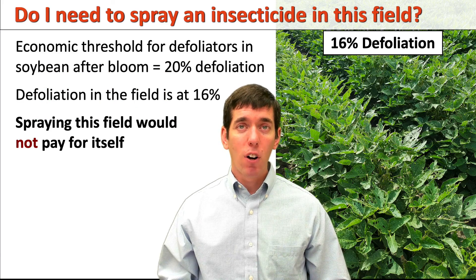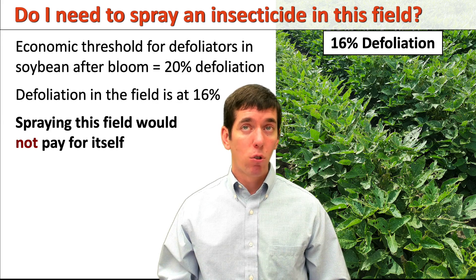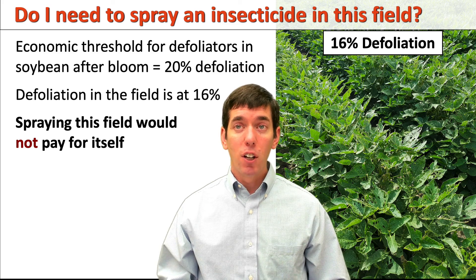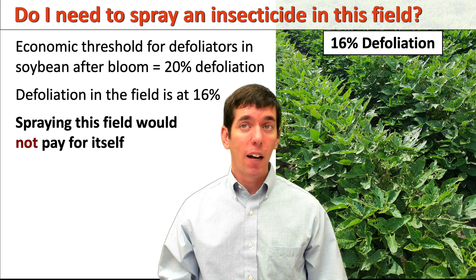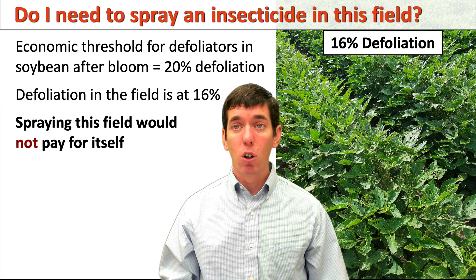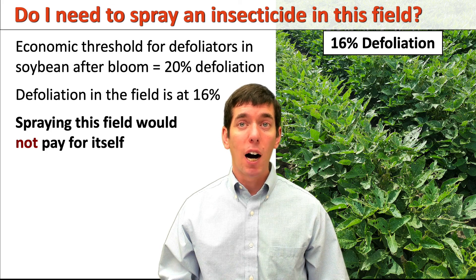Back to the question asked at the beginning: do I need to spray an insecticide in this field? We have an economic threshold of 20% defoliation after bloom. In this case, the field has 16% defoliation. We're below that economic threshold, so spraying in this field would not pay for itself. That's ultimately what we're trying to do — guide the spray decision by when it's going to provide a positive return on that input cost.